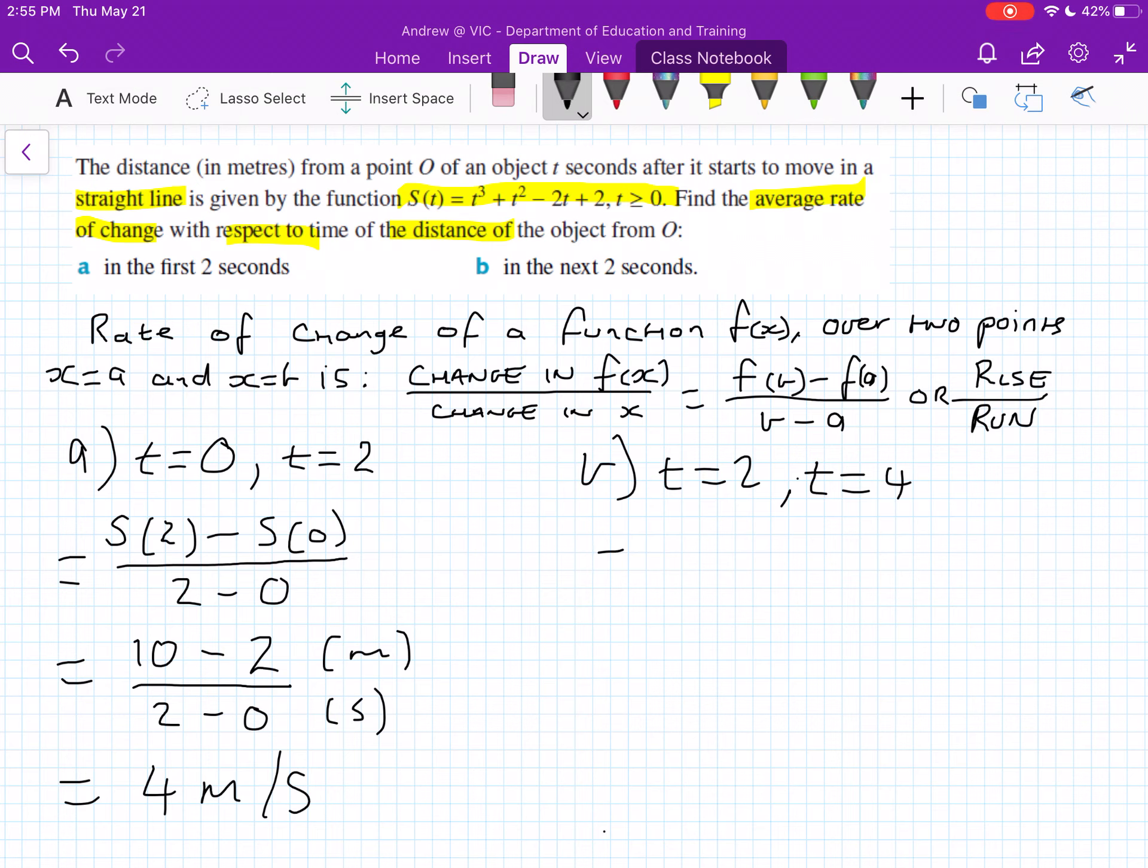So we just do the same, but substitute in the other values. So just remember, this is going to be s(4) because that's our more positive value. That's the one that's going to be furthest on the right. That's our y2 value. If you're breaking down the gradient minus s(2), this is going to be over four minus two. I've already done this on my calculator again. So s(4), when we sub 4 in for all the t values, gives us 74. We know s(2) from our last question is 10 over four minus two. So it's going to be 64 divided by 2, which is equal to 32. And make sure you always put the units meters per second.